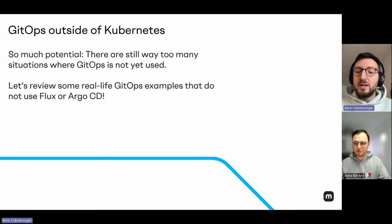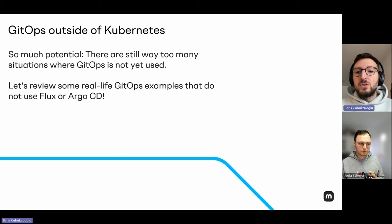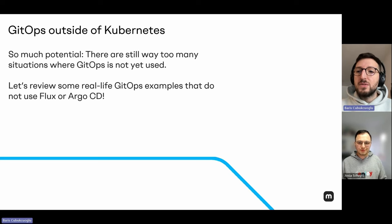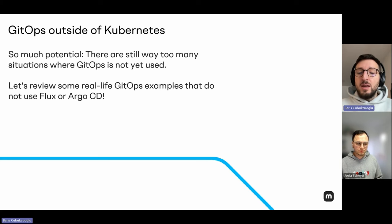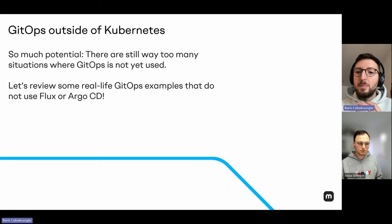We are a Swiss-based company with a branch here in Germany, and we consult a lot of customers — bigger customers such as large car manufacturers as well as smaller ones. Some do not have Kubernetes, some don't even have huge clusters, some don't even know what Kubernetes is about. But we are really convinced of the various benefits of GitOps and we try to implement it wherever it's possible and appropriate. In this talk we want to present two cases where we implemented GitOps outside the established paths of Flux and Argo CD.